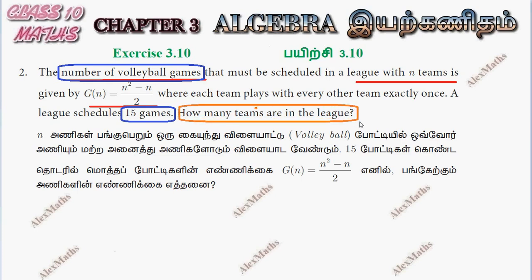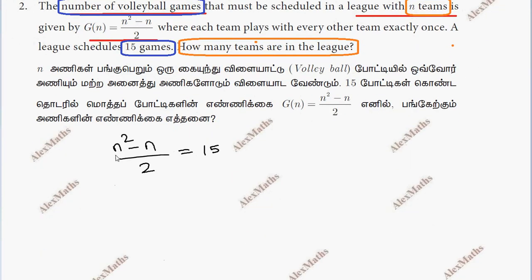That is, find n. So we equate g(n) to 15, the number of scheduled games equals 15. Cross multiply by 2.